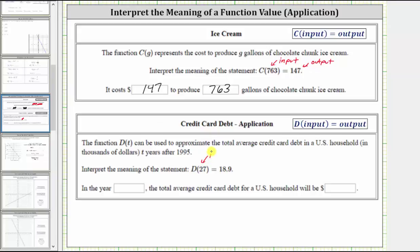Again, 27 is the input where the input is t, the number of years after 1995. And 18.9 is the output or function value where the function value is the total average credit card debt in a US household in thousands of dollars.